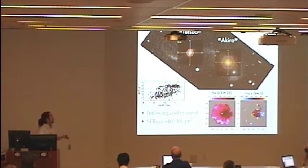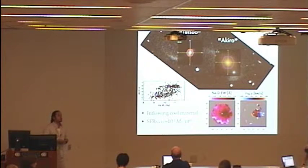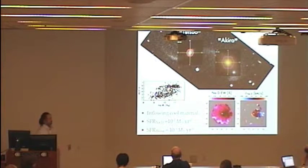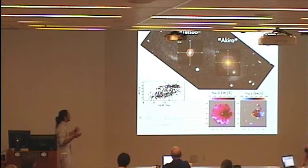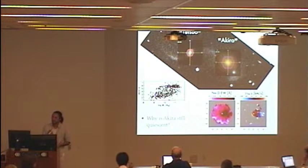But the measured star formation of Akira, which is based on SED fitting of optical and infrared photometry from SDSS and WISE, is only about 10 to the negative 5 solar masses per year. So the question is, why is Akira still quiescent? And I hope to answer that question by the end of this talk.